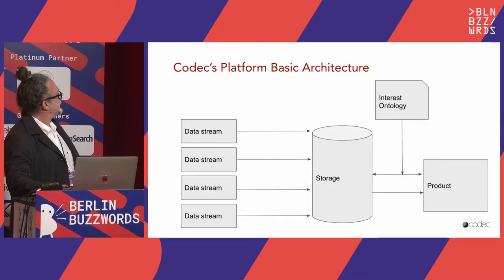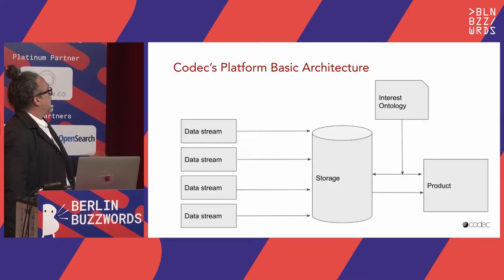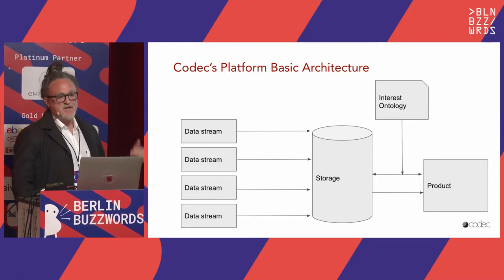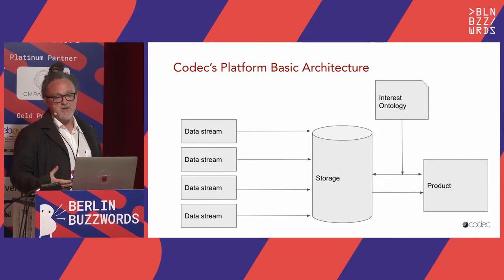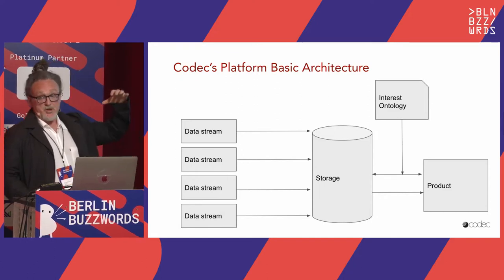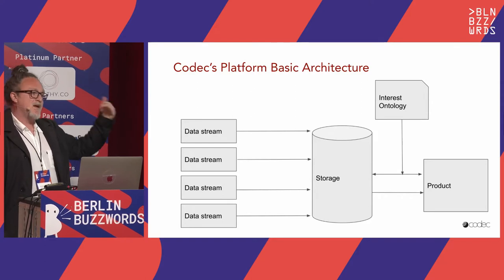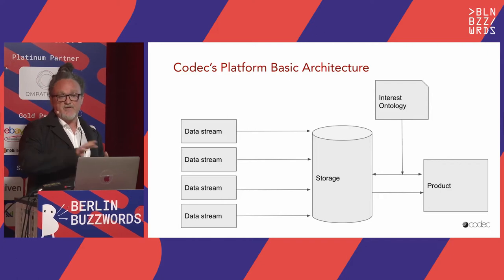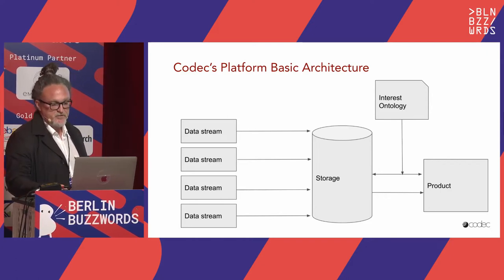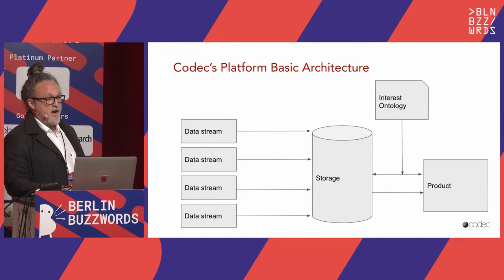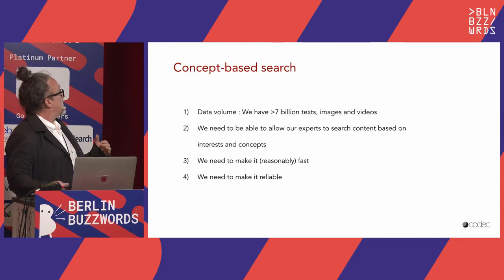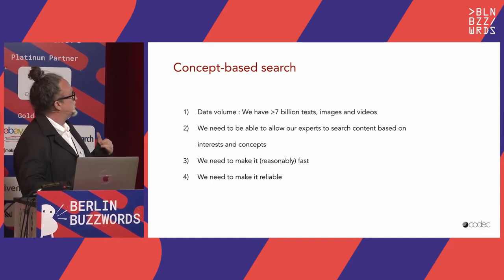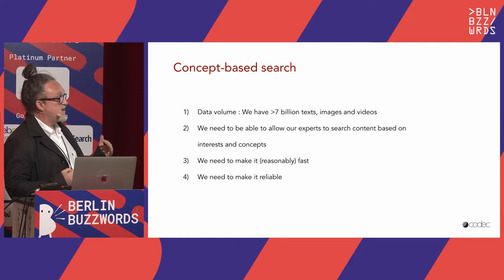To give a very basic architecture overview: we have multiple data streams which all end up in a single storage. On top of that, we have a knowledge graph which reflects concepts, segments, and interests. From there we have different products like dashboards that we serve to our clients. What we need to do is allow our experts to browse and search this content.